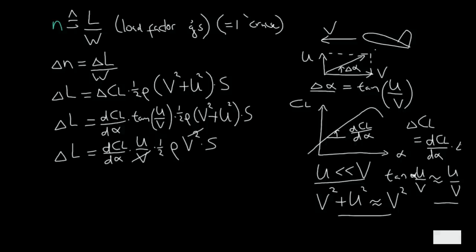So the additional lift will then be dCL/dα times U over V times half ρV squared times S. And since I have a V over here and a V squared over there, we can remove the V. Now if I would write not delta lift but delta load factor, so what the airframe is going to experience, we will find that this is dCL/dα times U times V times half ρS divided by W.